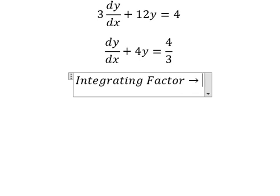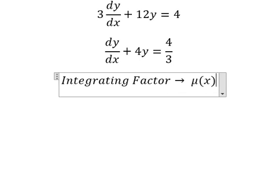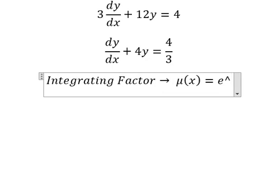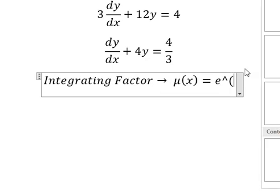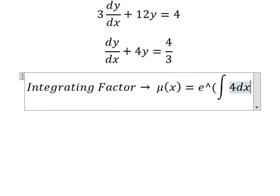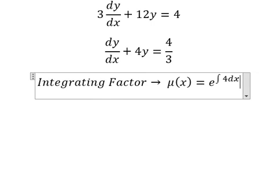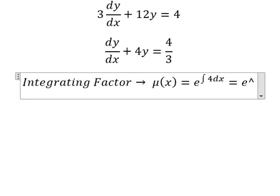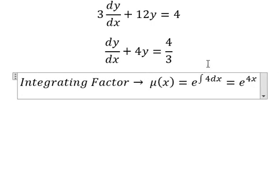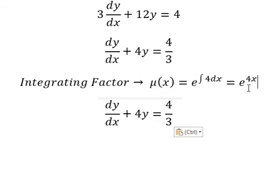We have to find μ(x) equals e to the power of the integral of 4dx. So we have e to the power of 4x. That means we multiply both sides by this.